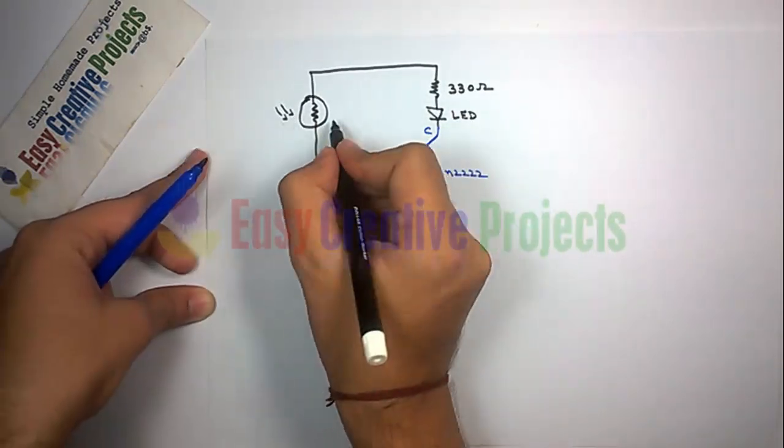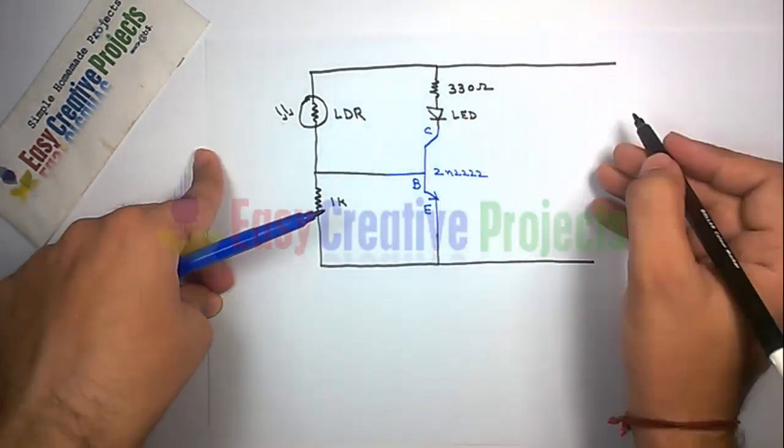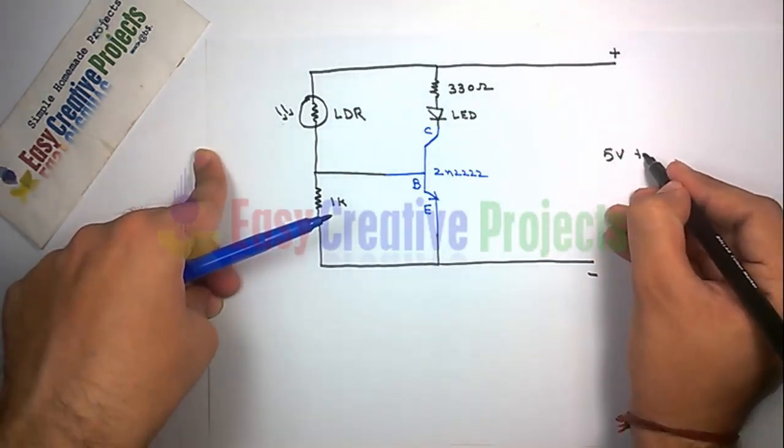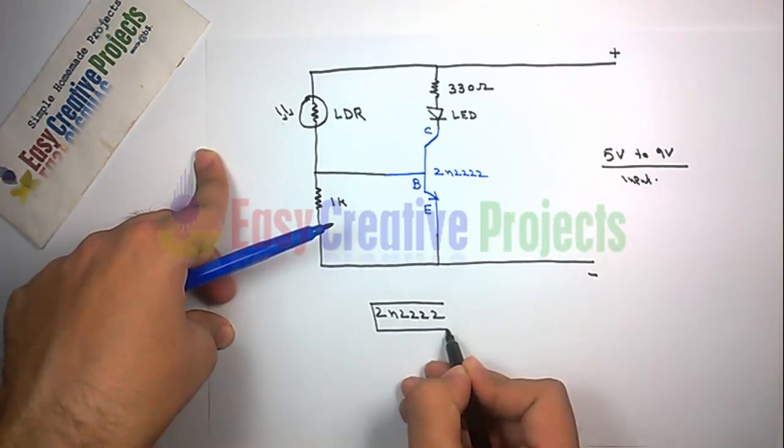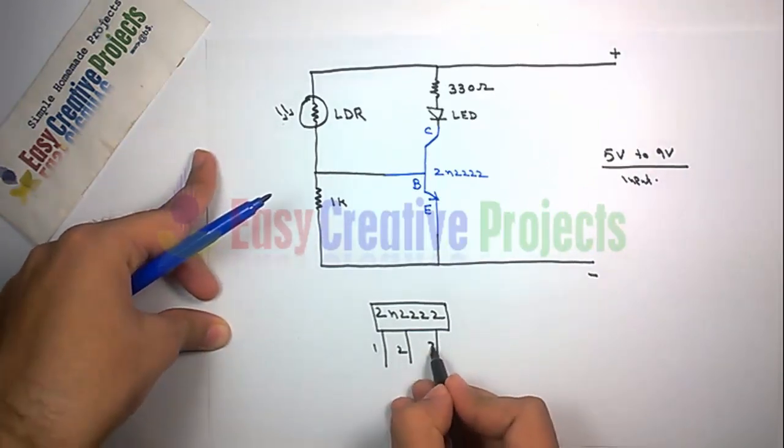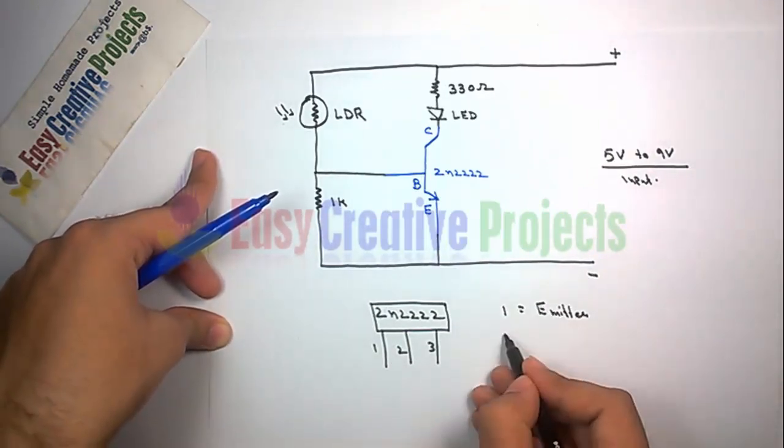Finally connect 9 volt power supply. 2N2222 has 3 pins: first emitter, second base, and third collector.